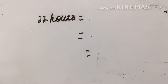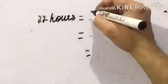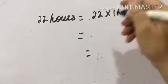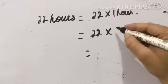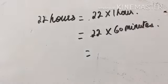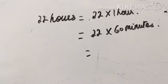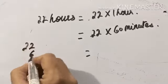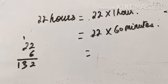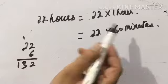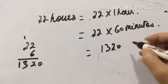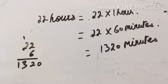Now: 22 hours to be converted into minutes. We write 22 into one hour, and then 22 into 60 minutes. Six twos are twelve, carry one; six twos are twelve plus one is thirteen. Since we are actually multiplying by 60, we add a zero to the answer, giving us 1320 minutes.